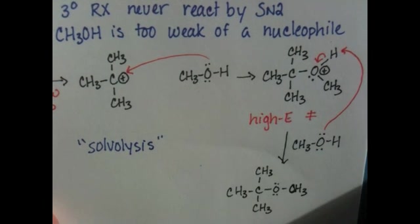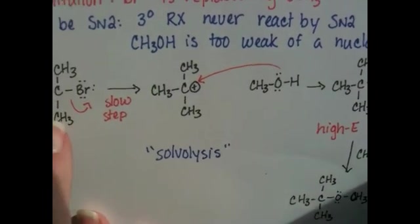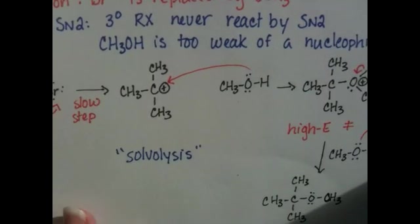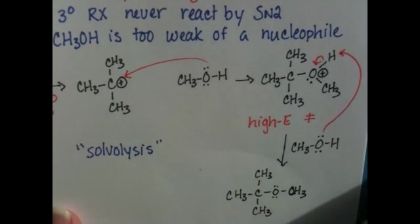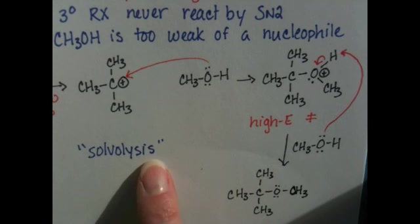A solvolysis is a particular type of reaction where a substrate, like in this case, the tert-butyl bromide, is reacting with a nucleophile that also serves as the solvent. In this reaction, the methanol is the nucleophile, and it's also the solvent for the reaction.